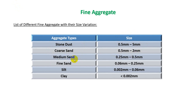Then medium sand: 0.2 mm to 0.5 mm. Then silt: 0.002 mm to 0.6 mm. After that, clay: less than 0.002 mm. Then fine sand from 0.6 mm to 2.25 mm. So these are the types of fine aggregate according to their size.